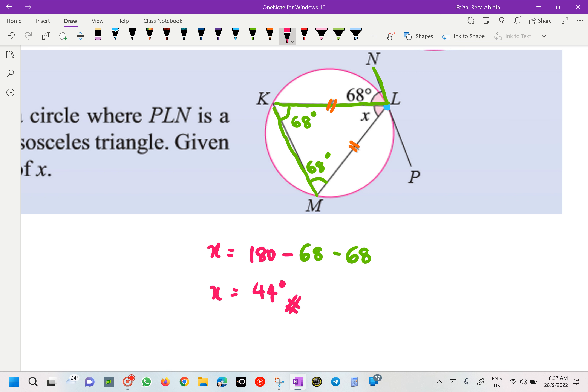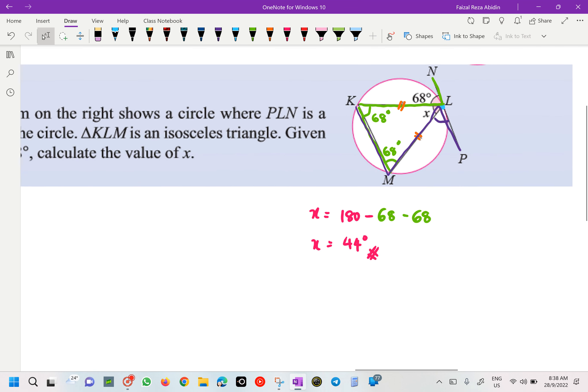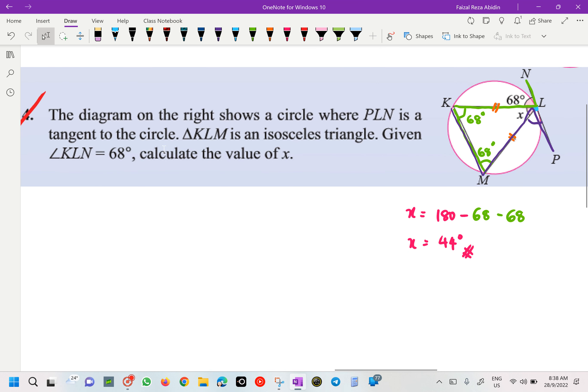Can I find the angle at our here? What do you get? 180 minus 68 minus 44. If I say that one is going to be 68 also, cannot. Why? Because that one is going to be alternate, but the question is not asking, so no need to find like that one.